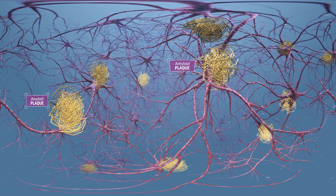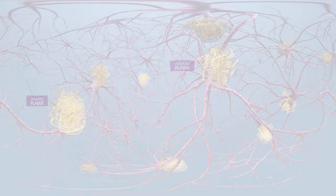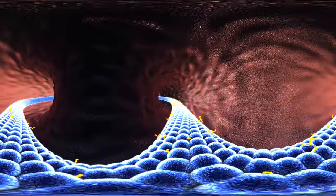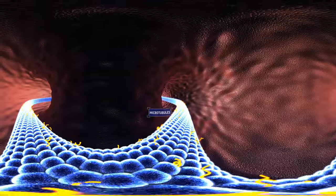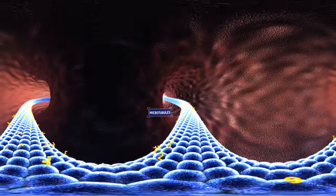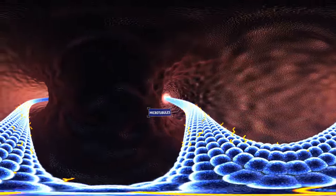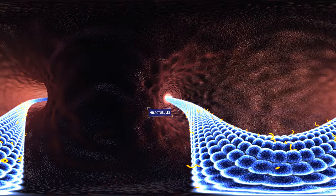Now let's move inside the neuron where those neurofibrillary tangles form. Neurons contain a system of microtubules that transports nutrients and other substances. A protein named tau helps hold that system together.